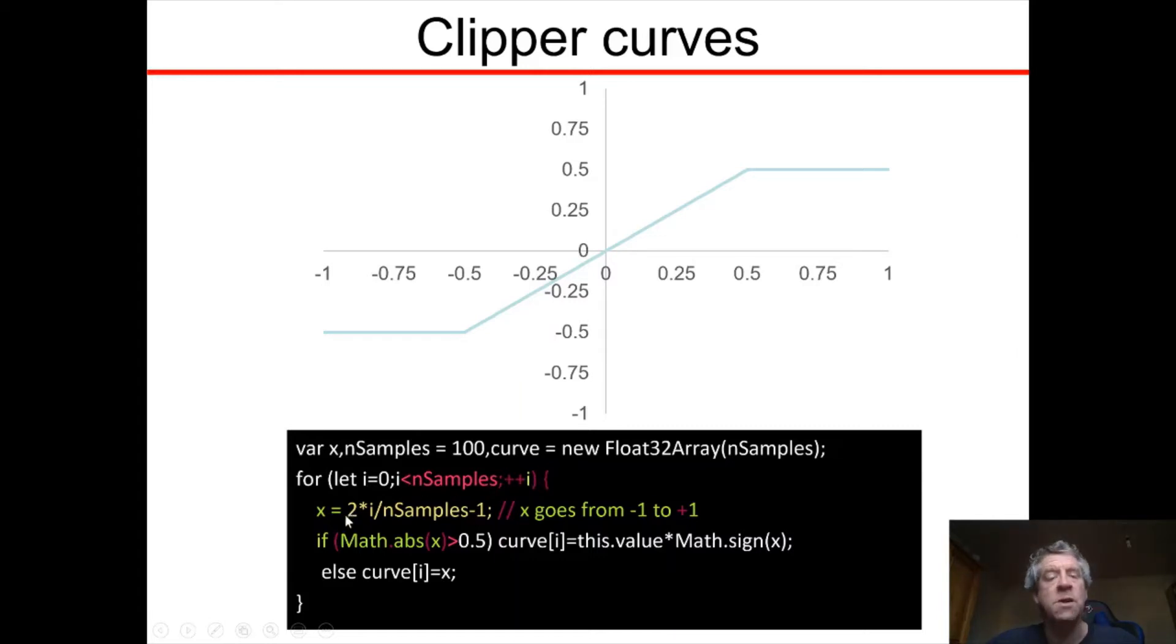Then for each of those values with index 0 to number of samples minus 1, we specify x which is 2 times that index divided by the number of samples minus 1. Well if the index is 0 then x is just 0 minus 1, and if the index is number of samples minus 1, then ignore the minus 1 for the moment, it should be quite a small value.